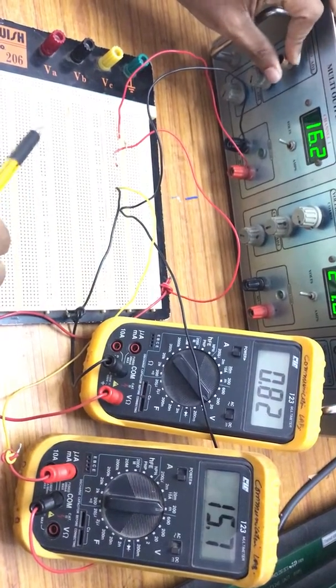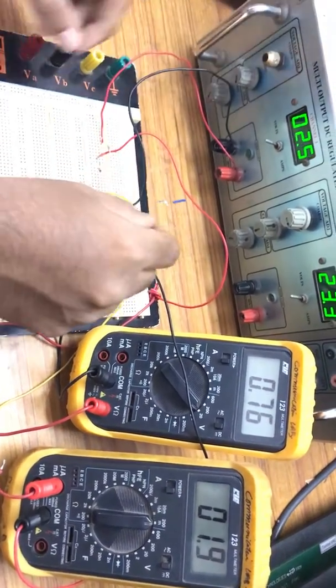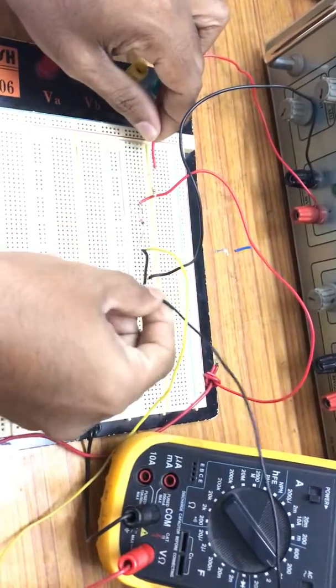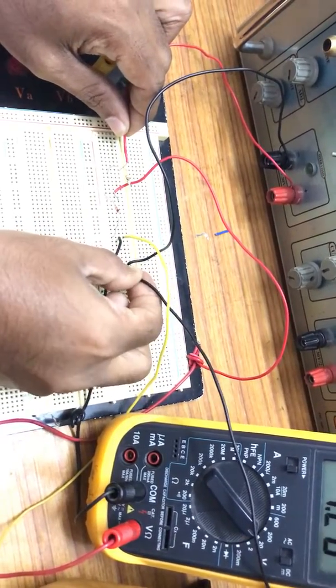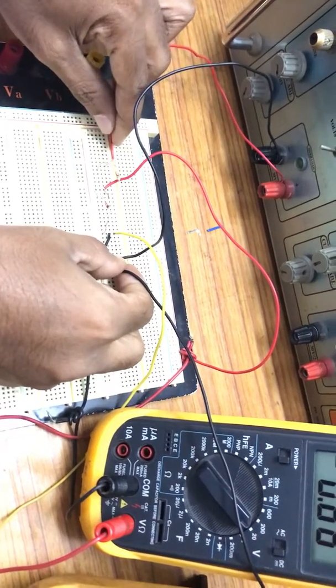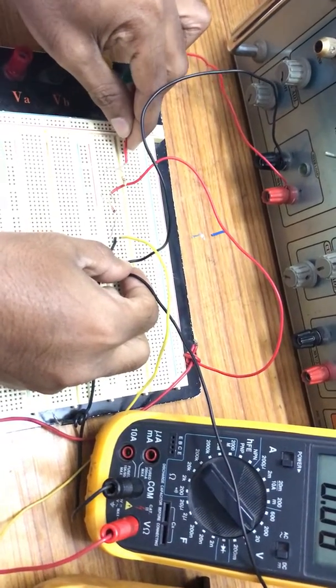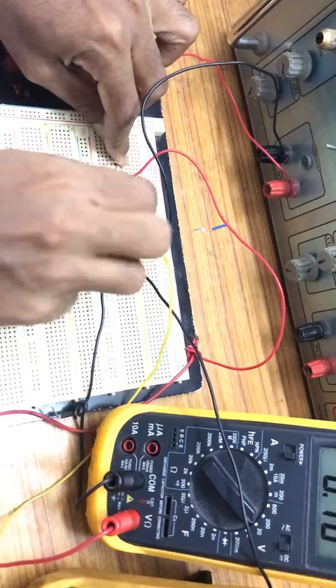For reverse bias, you need to reverse the polarities, positive and negative. You can change your DC supply polarity, or you could change the diode. In this case, I am just replacing the diode.